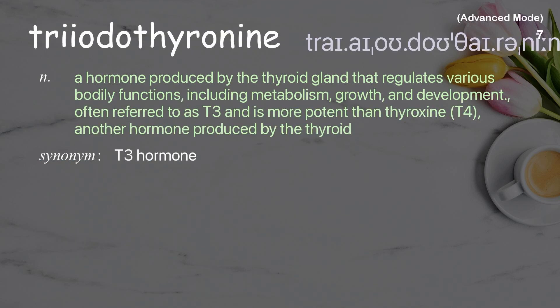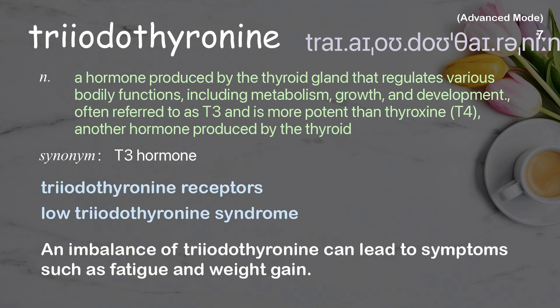Triiodothyronine. A hormone produced by the thyroid gland that regulates various bodily functions, including metabolism, growth, and development, often referred to as T3 and is more potent than thyroxin (T4), another hormone produced by the thyroid. Examples: Triiodothyronine receptors. Low triiodothyronine. An imbalance of triiodothyronine can lead to symptoms such as fatigue and weight gain.